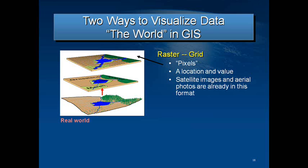Pay attention — this will show up on a test or a quiz. Because a pixel is square, the relationship of that square with the real on-the-ground distance is very important. If you have a raster with a 12-inch resolution, basically one pixel is the size of a standard floor tile — one square foot.